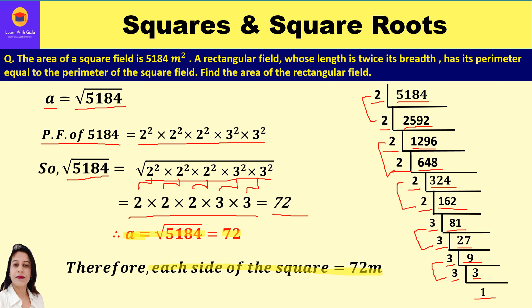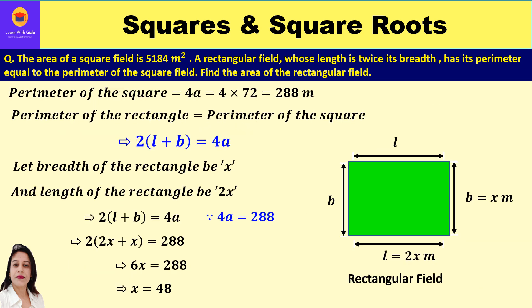We have now calculated each side of the square from its area. Next, we find the perimeter of the square field, because the problem states that the rectangular field's perimeter equals the perimeter of the square field. Perimeter of the square field = 4 × a = 4 × 72 = 288 meters.